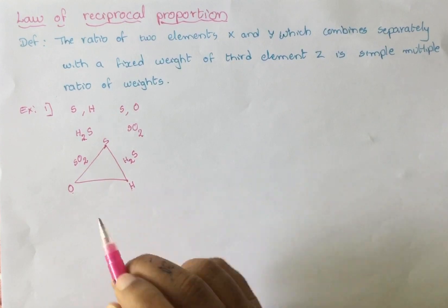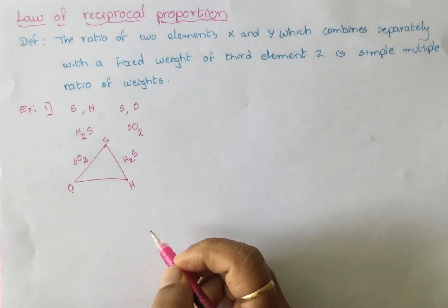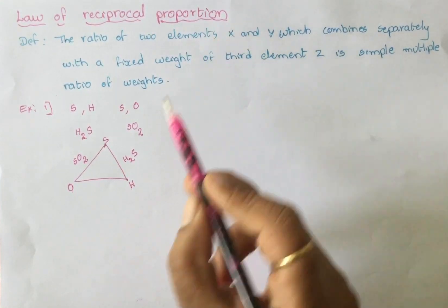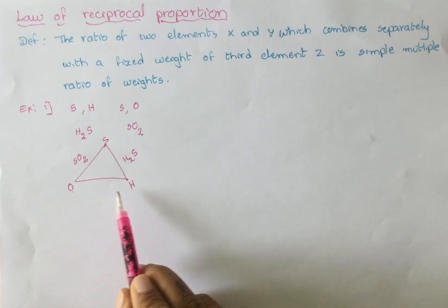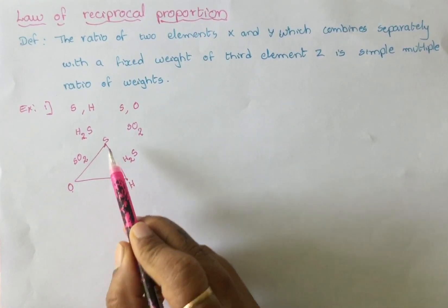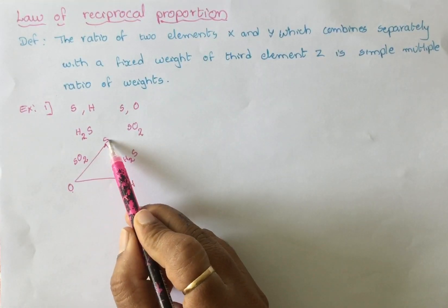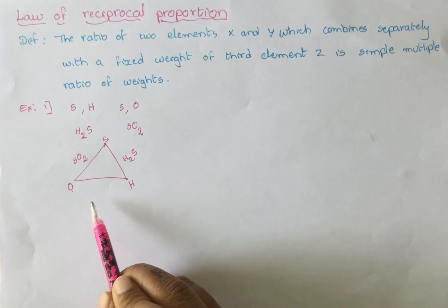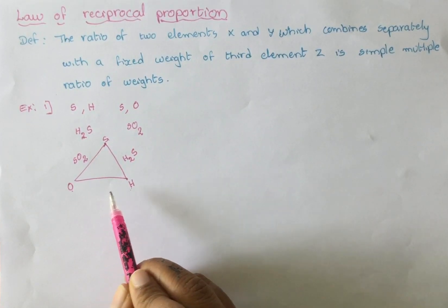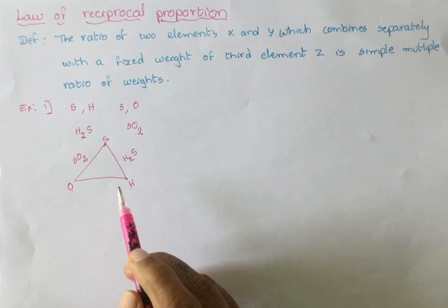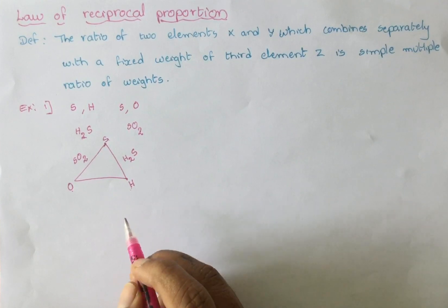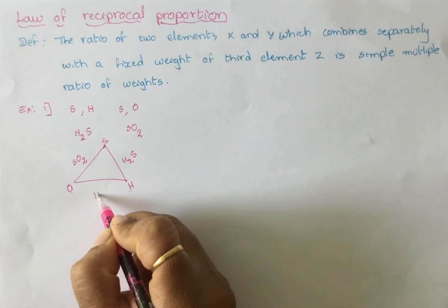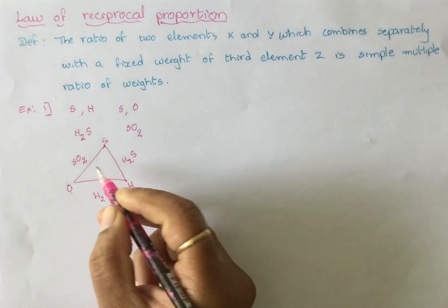Then, how do oxygen and hydrogen combine according to the law of reciprocal proportions? These two — x and y — both commonly combine with z, that is sulfur. So these two should combine in a fixed whole number ratio to form their molecule. We know it forms H₂O.